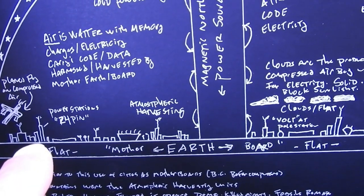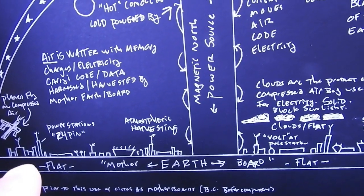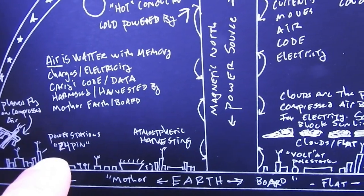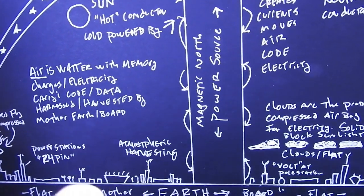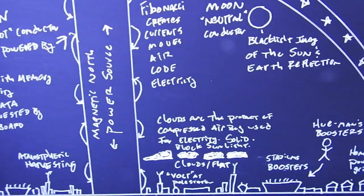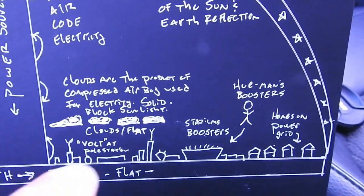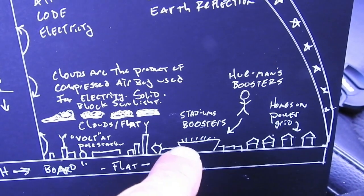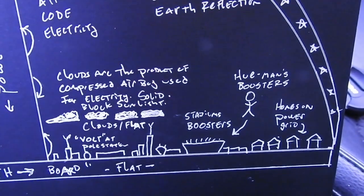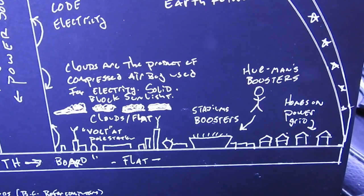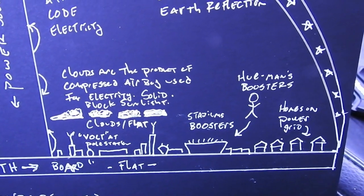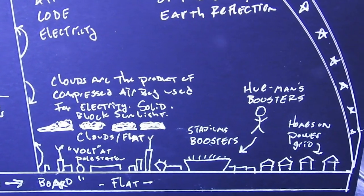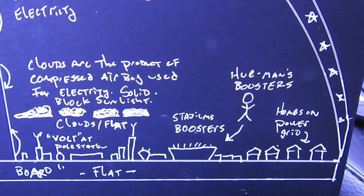Motherboard power stations, which are the skyscrapers with the masts on top, collecting the energy, powering up the cities — like 24-pin power connectors. Then you have people collected into stadiums, and you get them cheering, and humans become booster signals. I think they schedule sports games according to when they need a boost in the signal — cheerleaders, the booster club.